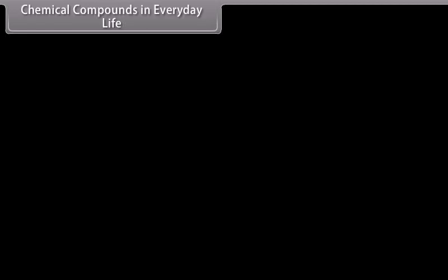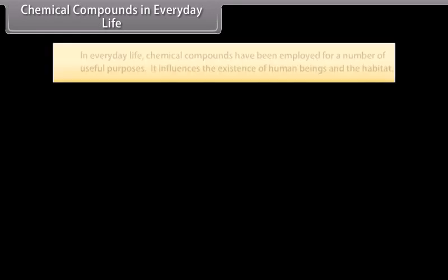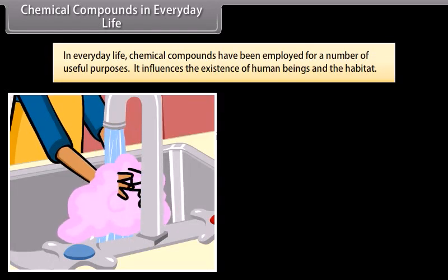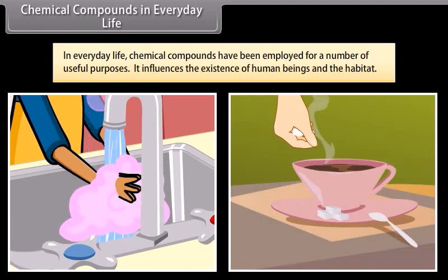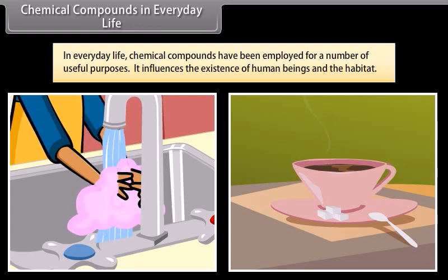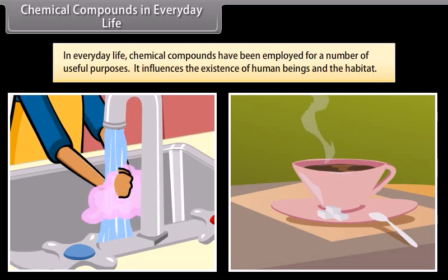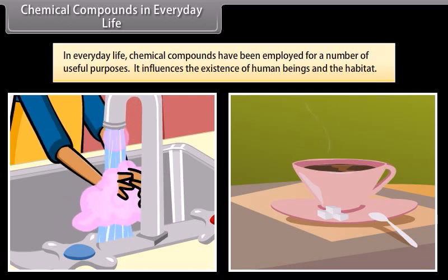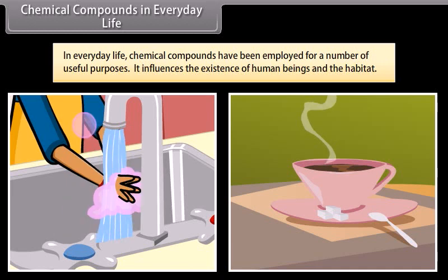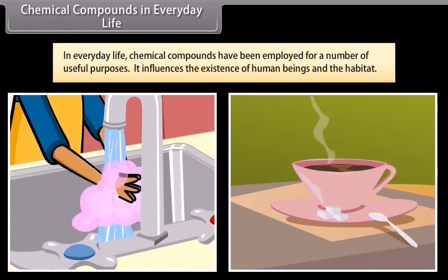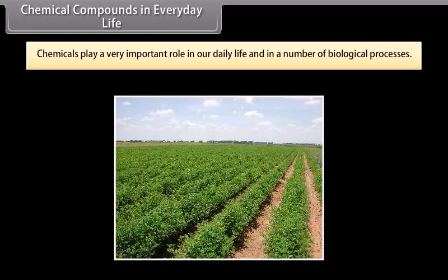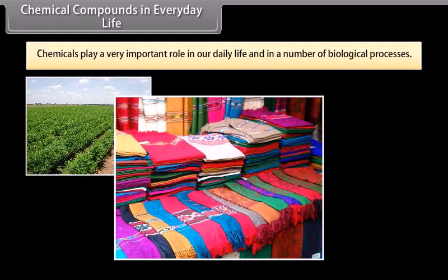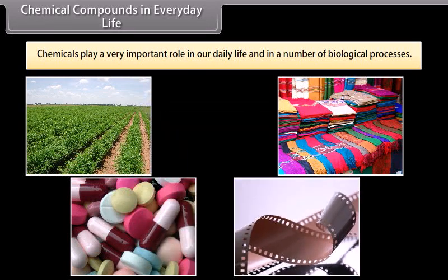Chemical compounds in everyday life: In everyday life, chemical compounds have been employed for a number of useful purposes. For example, sugar is used to sweeten tea, soaps are used for washing and bathing purposes, etc. It influences the existence of human beings and their habitat. Besides those, a number of compounds find application in agriculture, textiles, medicines, photography, etc. Thus, chemicals play a very important role in our daily life and in a number of biological processes.